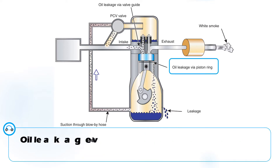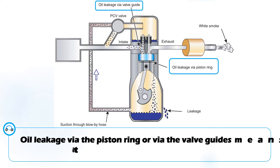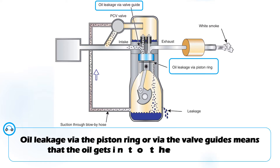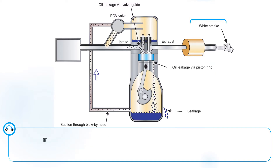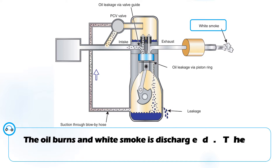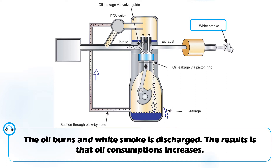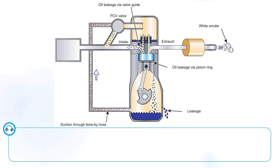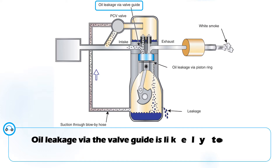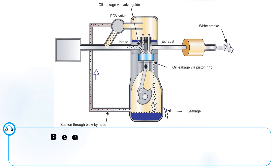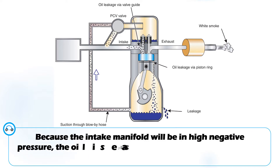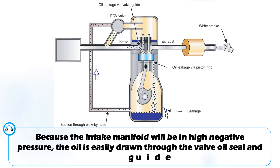Oil leakage via the piston ring or via the valve guides means that the oil gets into the combustion chamber. The oil burns and white smoke is discharged, and the result is that oil consumption increases. Oil leakage via the valve guide is likely to occur during deceleration because the intake manifold will be in high negative pressure — the oil is easily drawn through the valve oil seal and guide.